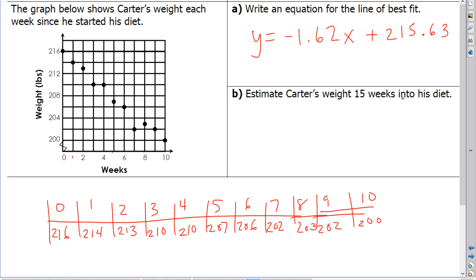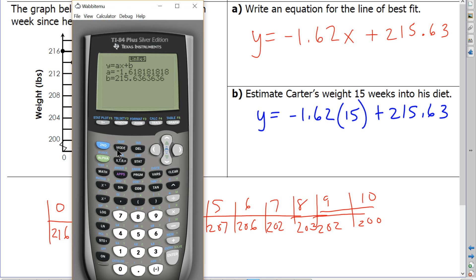So estimate Carter's weight 15 weeks into his diet. So 15 weeks into his diet would be negative 1.62 times 15 plus 215.63. So again, you do need to show where you're plugging in the 15, but you don't actually have to do that math yourself. So quit out of this here and enter this negative 1.62 parenthesis 15 plus 215.63 pounds. So it looks after 15 weeks, if he continues losing at the same rate, that he would weigh 191.3 pounds.